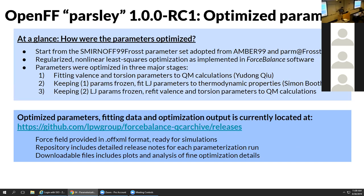Here is the current location of the optimized parameters, the fitting data, and optimization output. We forked it over from my group repository to the more official force field repository, so this link needs updating. The force field is provided in the OFF XML format and you can use it for simulations right away. This repository includes really detailed release notes for each parameterization, showing our thought processes in getting to where we are now. The downloadable files include not only the parameters but detailed information about the optimization - how well our current parameter set performs for each single optimized geometry.